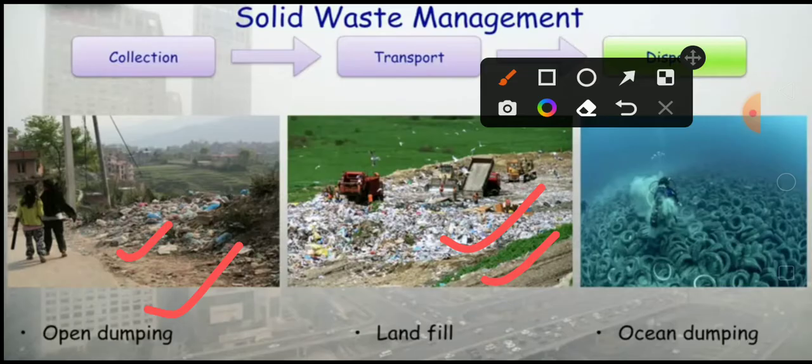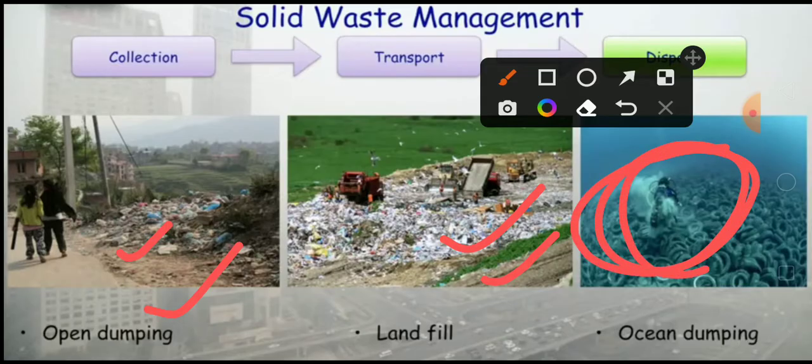The third disposal method is ocean dumping, where different solid waste is dumped into the ocean. Ocean dumping is also one of the easier types of disposal in solid waste management.